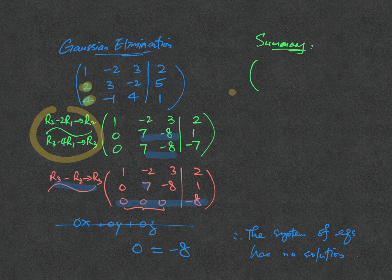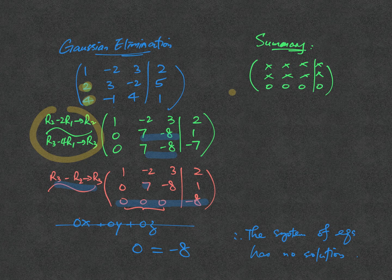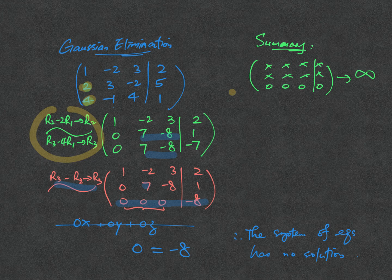The first case will be when you have your row echelon form in this format, having all 0s in the last row. That means you have infinitely many solutions in your answer. That's why we make use of T to present the answer.